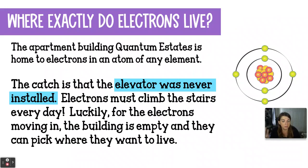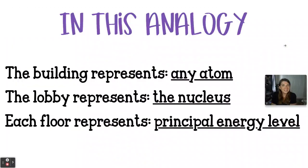Inside of this building, the elevator was never installed. So the electrons have to climb up the stairs, a four-story walk up if they live in the fourth energy level. In this analogy, the building represents any atom. The lobby is going to represent the nucleus, and each floor is going to represent a principal energy level. Based on the periodic table, which has seven periods, the principal energy levels, each of those is going to be a floor of the building.